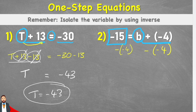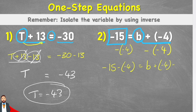So my new line would read negative 15 subtract negative 4 equals b plus negative 4 minus negative 4. Now, when we look at this right-hand side, we can see that the plus negative 4 and the subtract negative 4 will cancel themselves out and equal 0. So I'm left with just b.